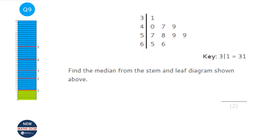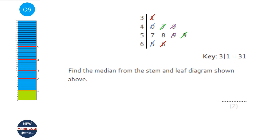We're asked to find the median from this stem-and-leaf diagram. The good thing about stem-and-leaf diagrams is they automatically put numbers in order of size. Using the crossing-out method, cross out the smallest (31) and biggest (66), then the next smallest (40) and next biggest (65), continuing until left with two middle values: 57 and 58. When there are two middle values, add them and divide by 2 — halfway between 57 and 58 is 57.5.